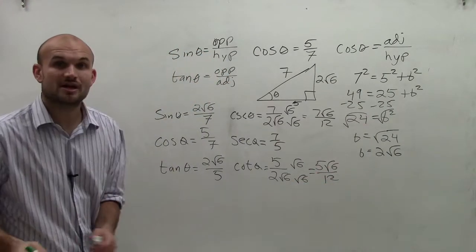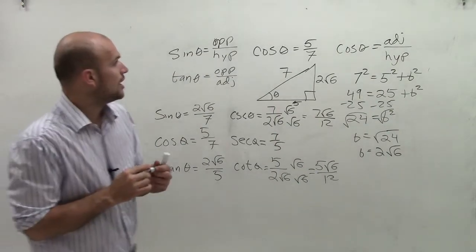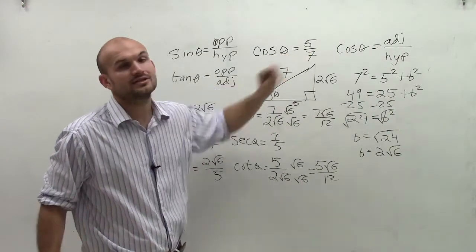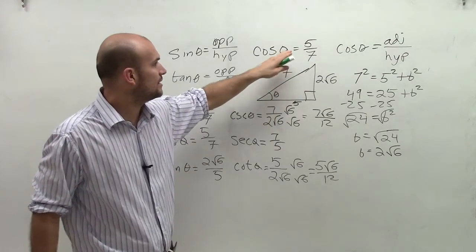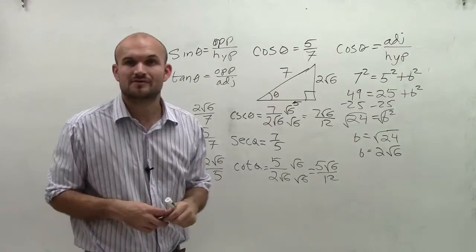So there you go, ladies and gentlemen. That's how you find your six trigonometric functions when given the trigonometric function for cosine of 5 over 7. Thanks.